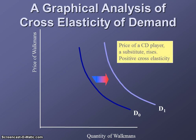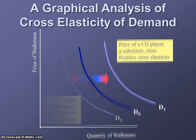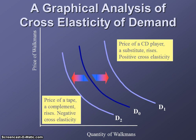And demand for Walkmans will be negatively affected — negative cross elasticity — when the price of a tape, which is a complementary good for Walkmans, rises. You use tapes with Walkmans to get your music. Therefore, there's a negative answer, and we know that they're complements. So: positive number means they're substitutes, negative number means they're complements.